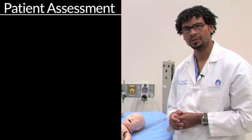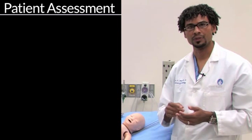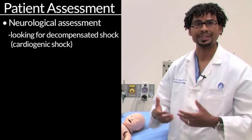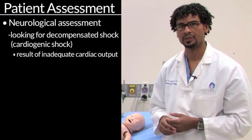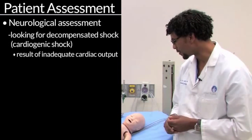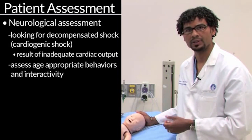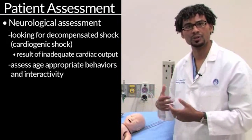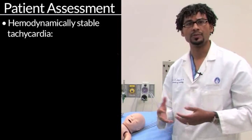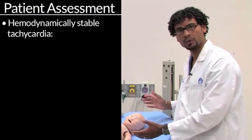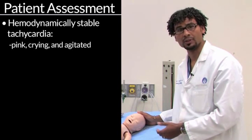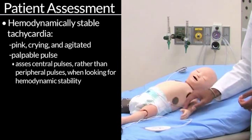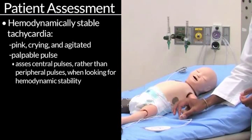The assessment of the patient to determine the effects that the arrhythmia has on the patient should involve a neurological and hemodynamic assessment. You're doing the neurological assessment to try to assess for essentially decompensated cardiogenic shock as a result of inadequate cardiac output from the tachyarrhythmia. In pediatrics, that's looking for age-appropriate behaviors and interactivity. A baby with a hemodynamically stable tachycardia would look pink, be crying, be agitated, possibly not feel too well, but would have a palpable pulse. It's much more important to assess central pulses than peripheral pulses when we're looking for hemodynamic stability and capillary refill.